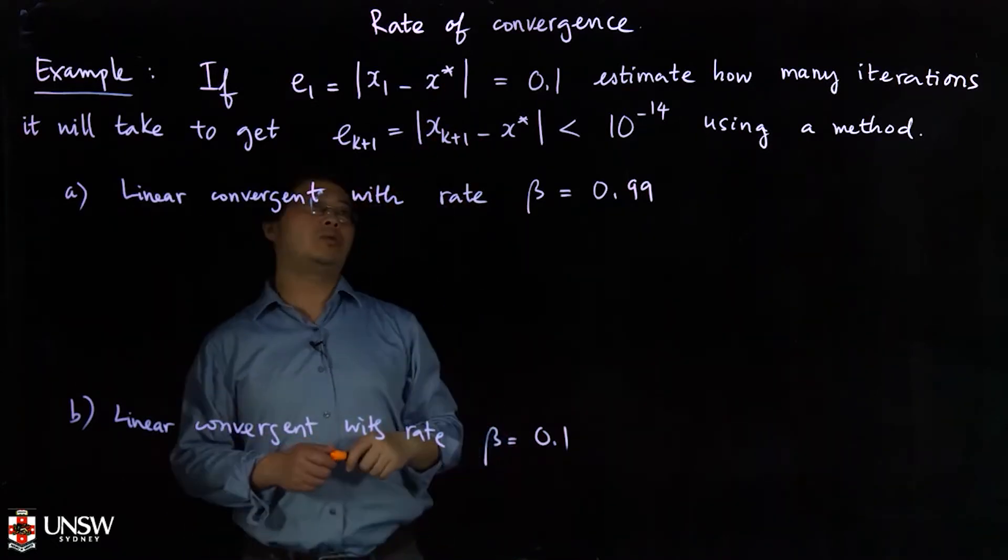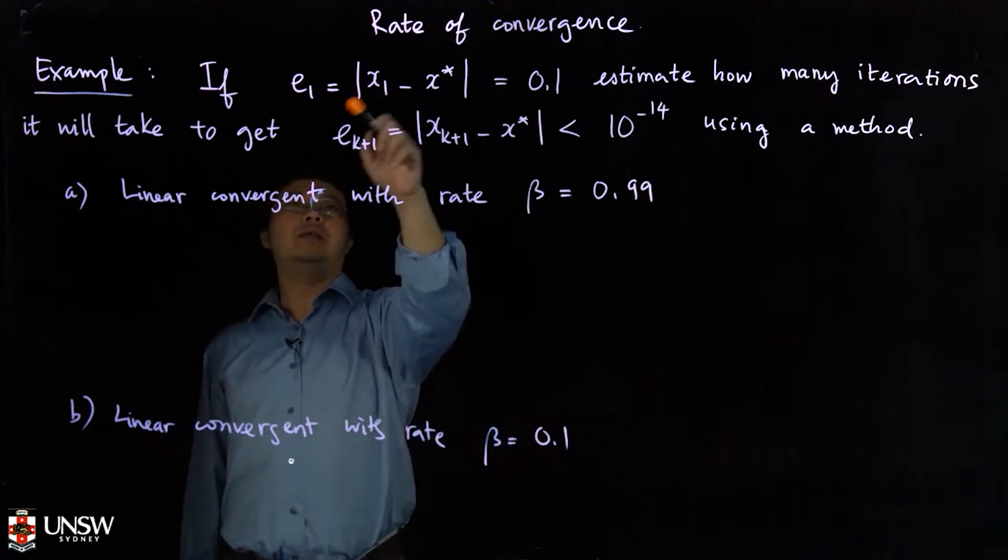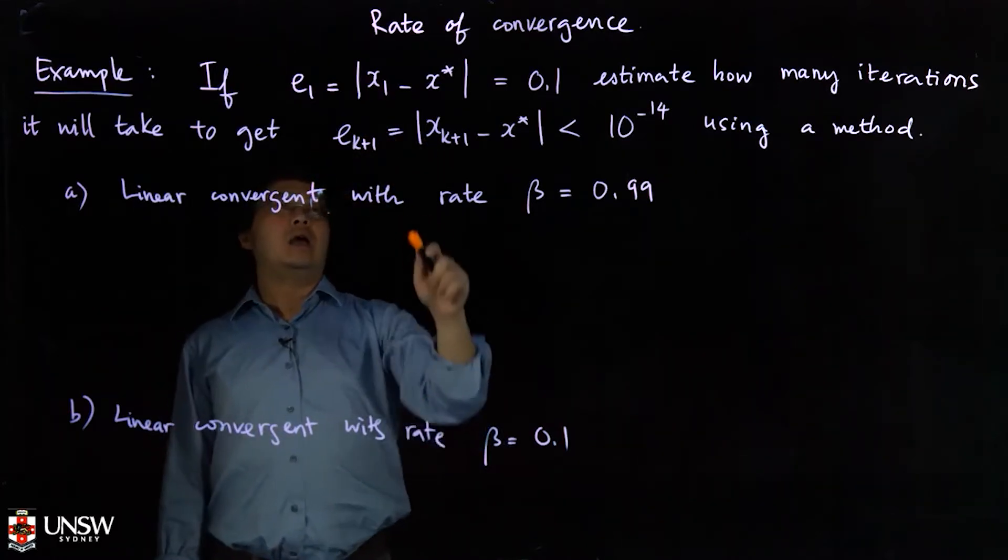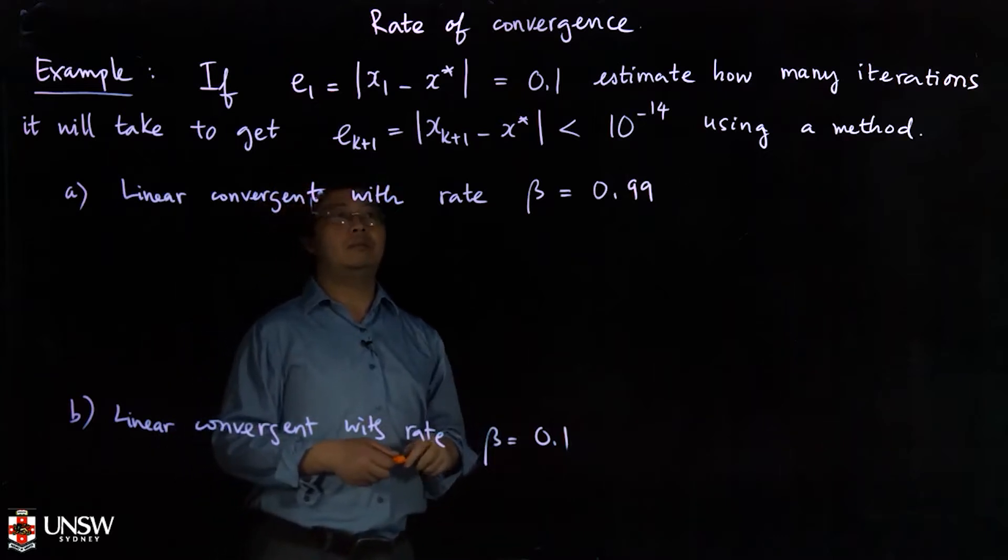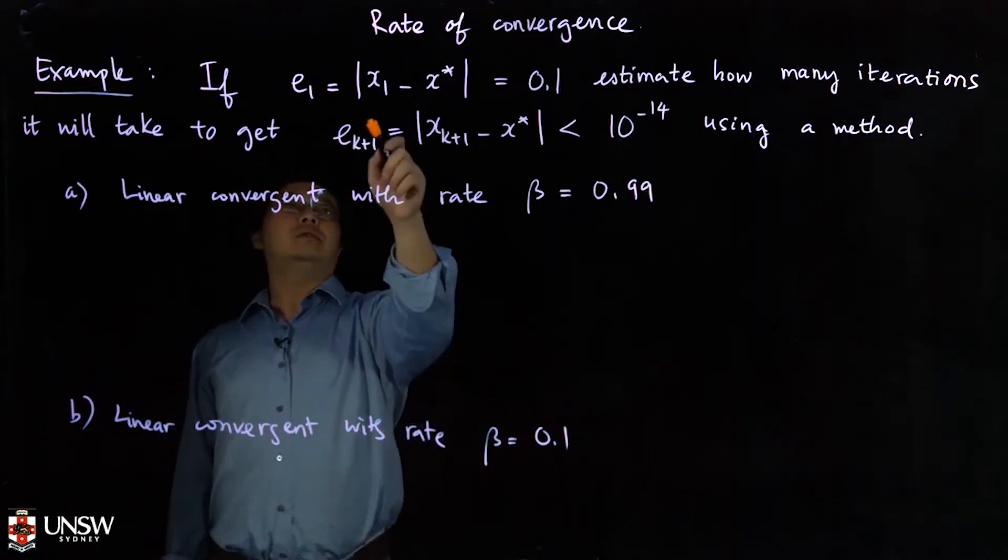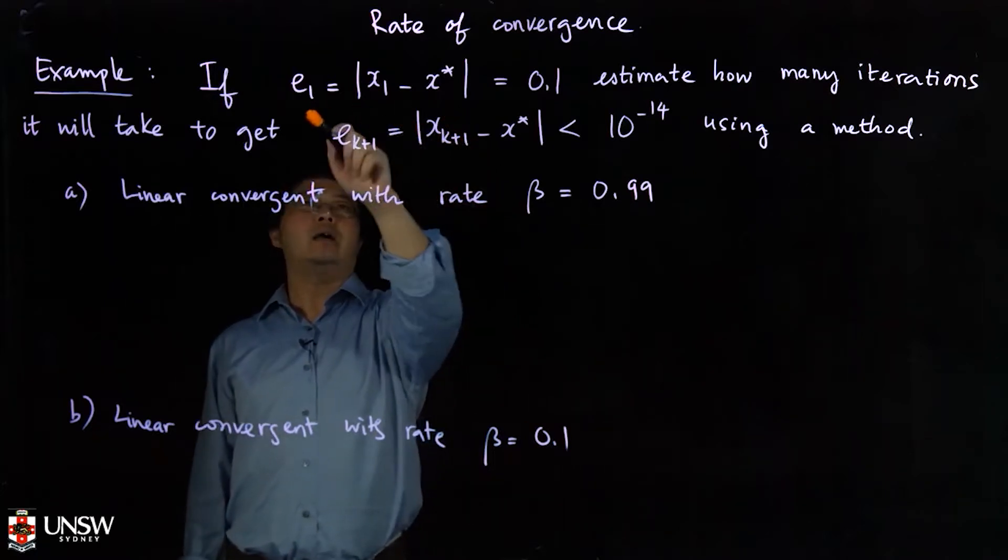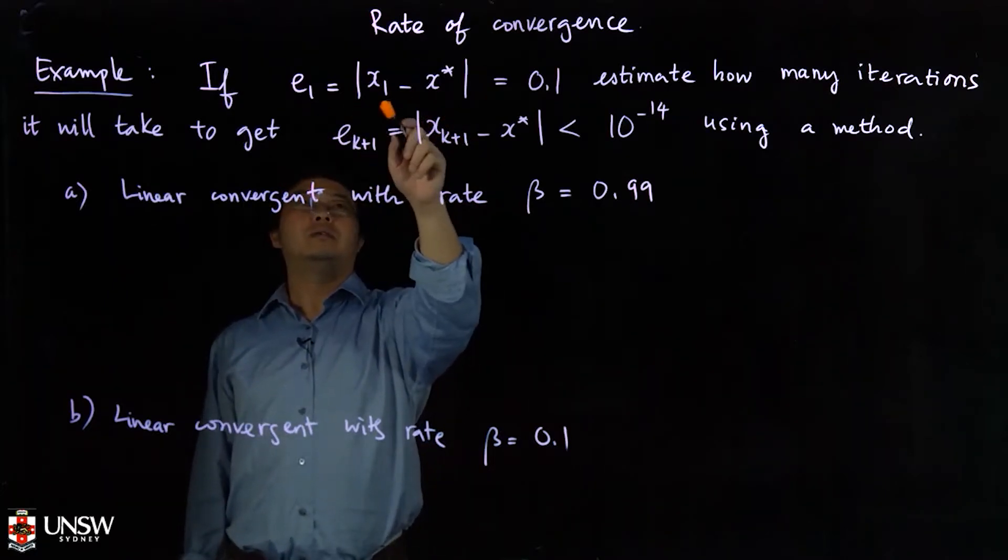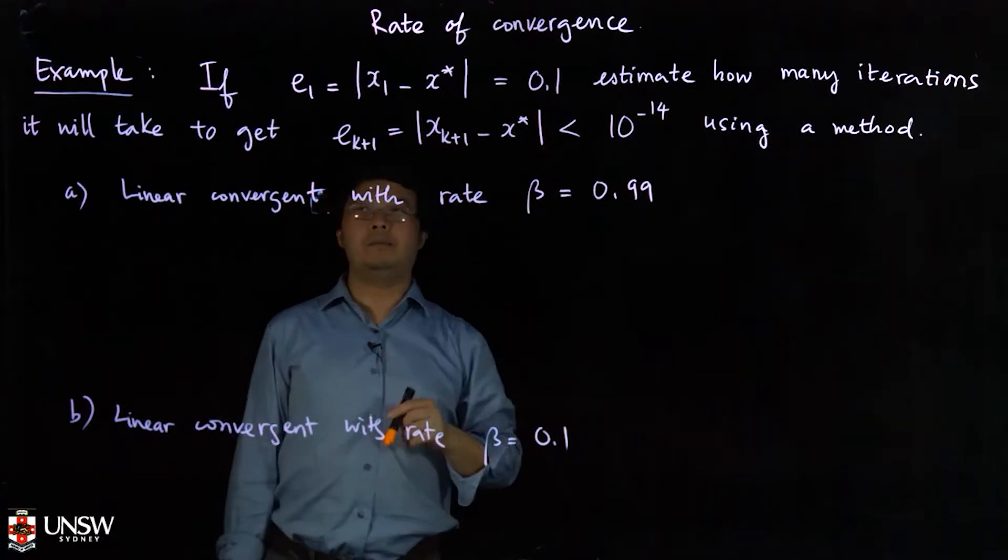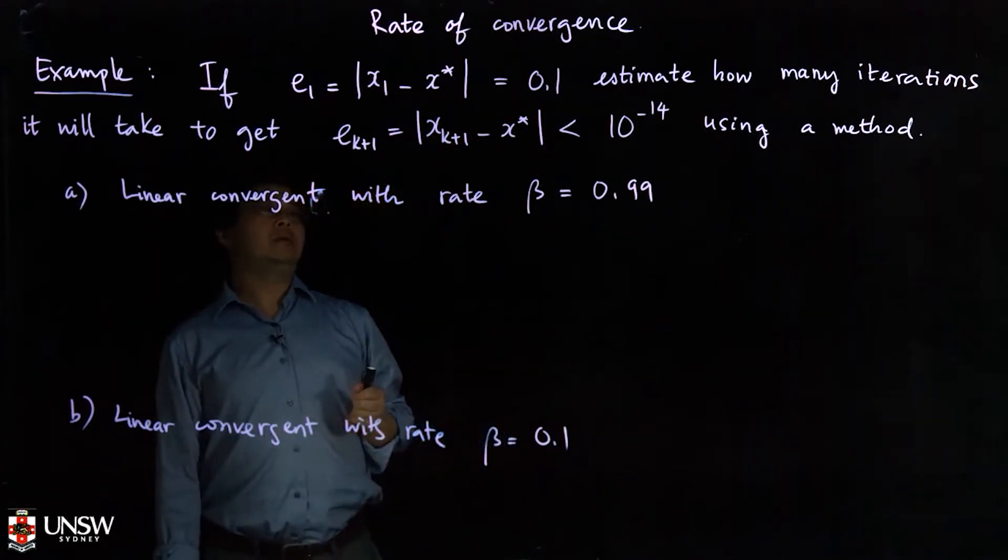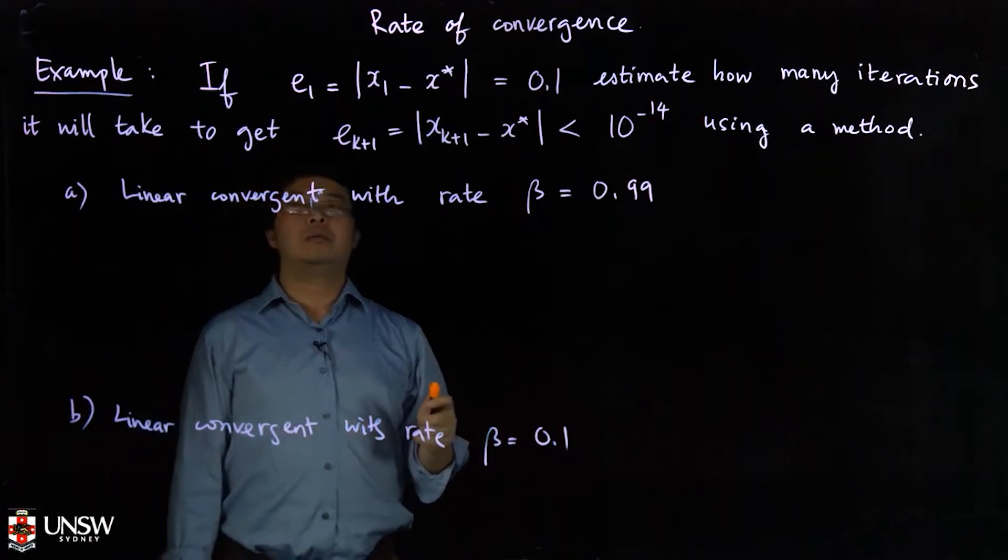X1 is your initial guess and X_{k+1} is the k+1 iteration. Now suppose that you start with X1 and you know that the error between your initial guess and the exact solution is 0.1.